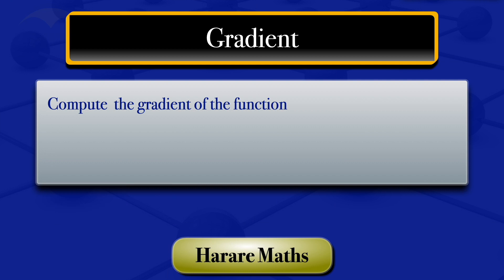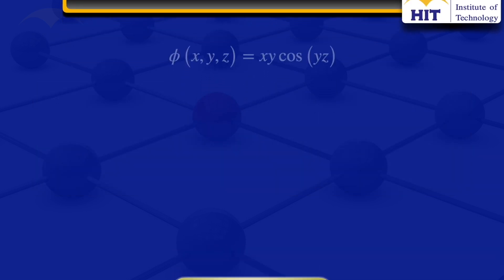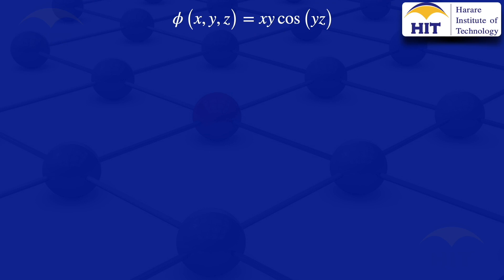In this video, I'm going to evaluate the gradient of φ(x, y, z) equals xy multiplied by cosine of yz. So we are given that function there, it's a function of three variables.